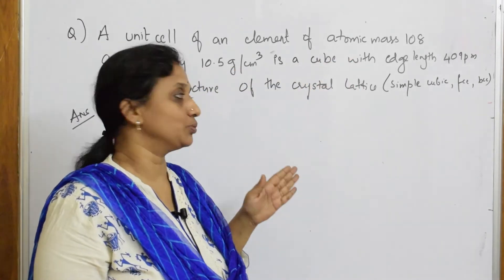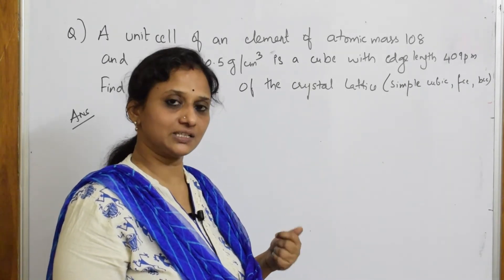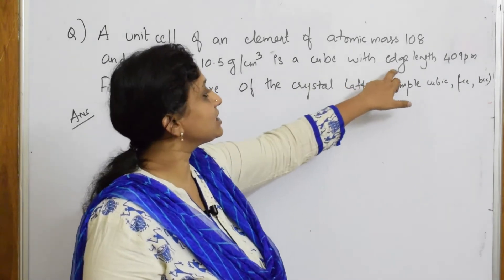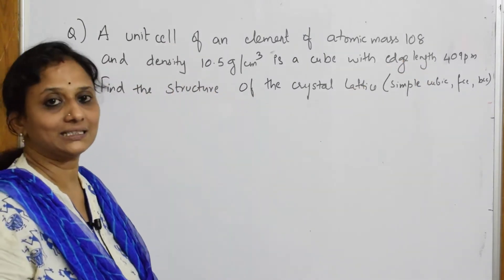So now they have given me it's a cube. They have not specified whether it is FCC, BCC or SCC. That is what I have to find out. With an edge length of 409 picometer, find the structure of the crystal lattice. Right.